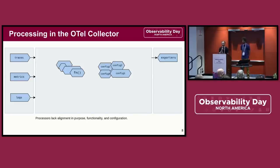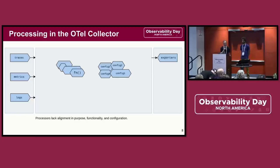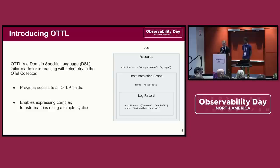Taking a step back for a minute, what features would we like to see in a more generalized solution to our problems? We'd like access to the full OTLP payload in one place, which is going to be necessary for us to access the specific parts of the body for filtering and metadata extraction. We'd also like to be able to perform operations at any part of the payload, so that we can get things looking exactly how they need to. And finally, we'd like it if our prior experience with metrics and traces would carry over when we're working with logs.